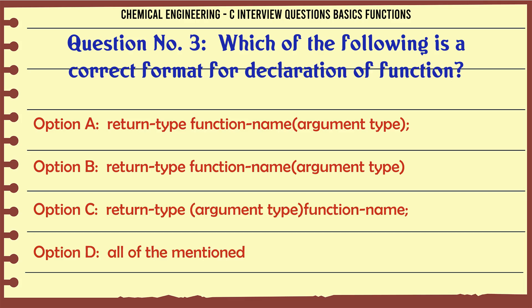Option A: return-type function-name(argument type); Option B: return-type function-name(argument type); Option C: return-type (argument type)function-name; Option D: all of the mentioned. The correct answer is return-type function-name(argument type).